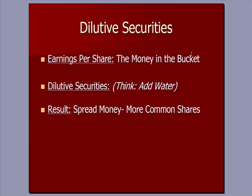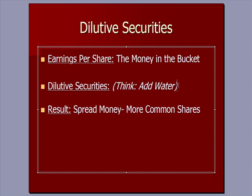I want to talk about diluted securities, and we've got to start off the discussion by talking about earnings per share. EPS is earnings of a company divided by the number of common stock shares outstanding — you can think of that as money in a bucket. The money can go to pay a dividend, or it can be kept in the company as retained earnings. Diluted securities means that the dollars in earnings are spread over more common stock shares. When we want to dilute something, we add water to it and spread it out — we thin it out over more volume. The same thing is true with dilutive securities: we're spreading those same dollars of earnings over more common stock shares.